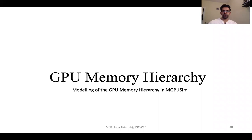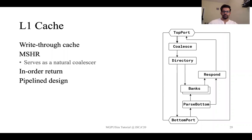Hello everyone. In this section we are going to discuss how the GPU memory hierarchy is modeled in MGPU SIM. The first thing we're going to talk about is the L1 cache. There are three different types of L1 cache: the L1 vector cache, which is private to each compute unit; the L1 scalar cache; and the L1 instruction cache, which is shared by four compute units, referred to as a shader array.